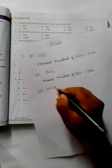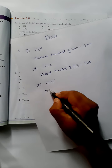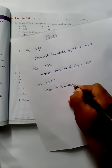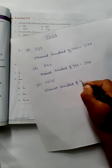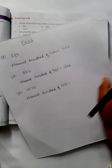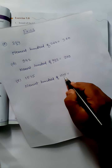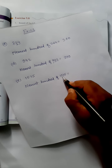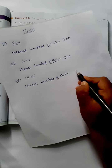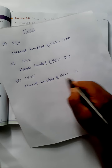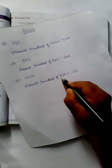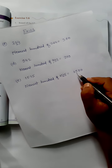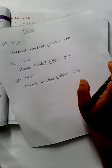Now question 1e: the number given is 1535. For the nearest hundred, you look at the tens digit. Here the tens digit is 3, which is less than 5, so you do not add one. The hundreds digit 5 stays the same, and the thousands digit 1 also remains. You put two zeros after the hundreds place, giving 1500.